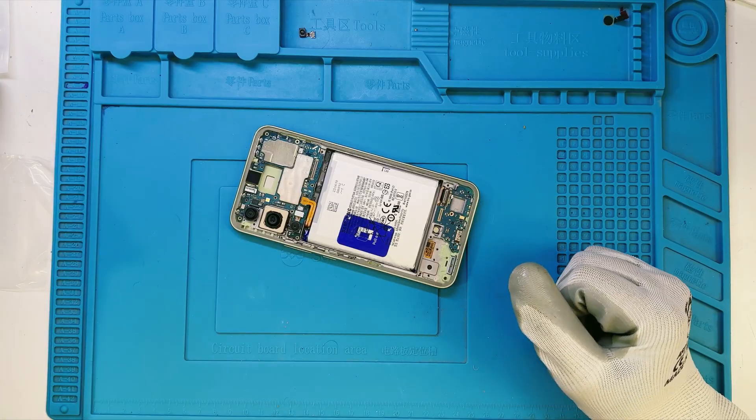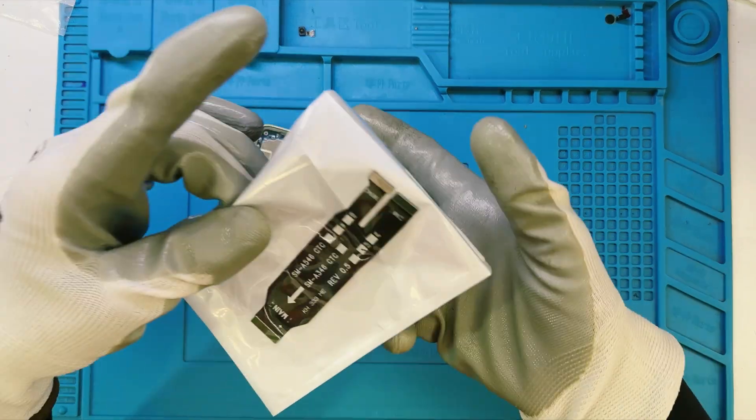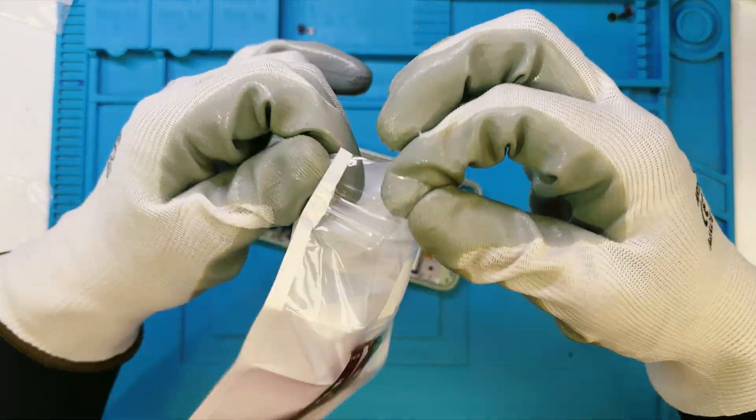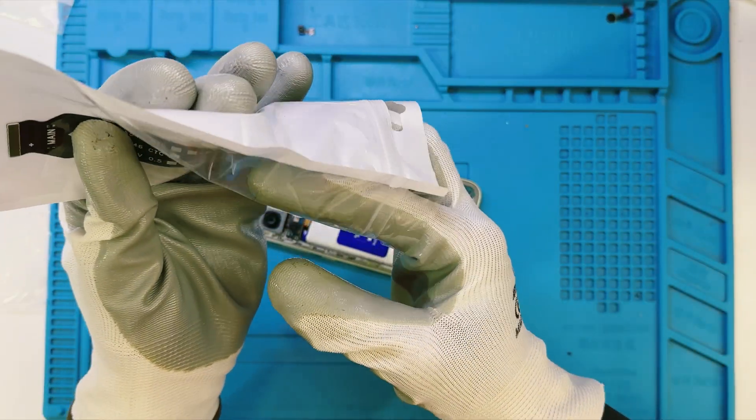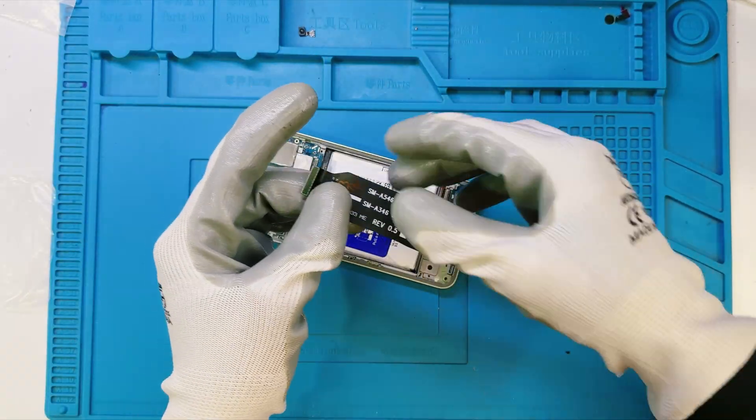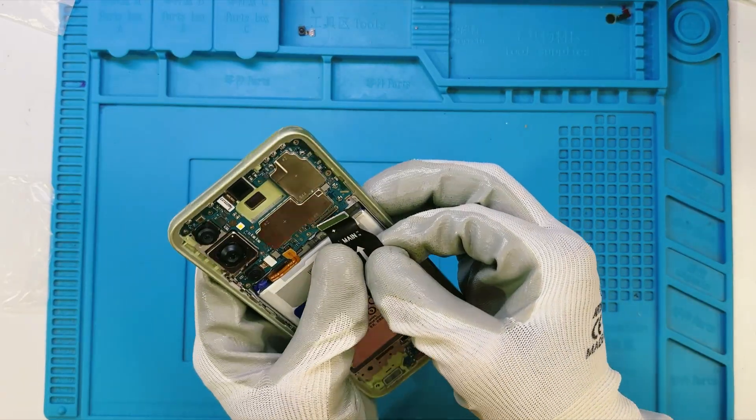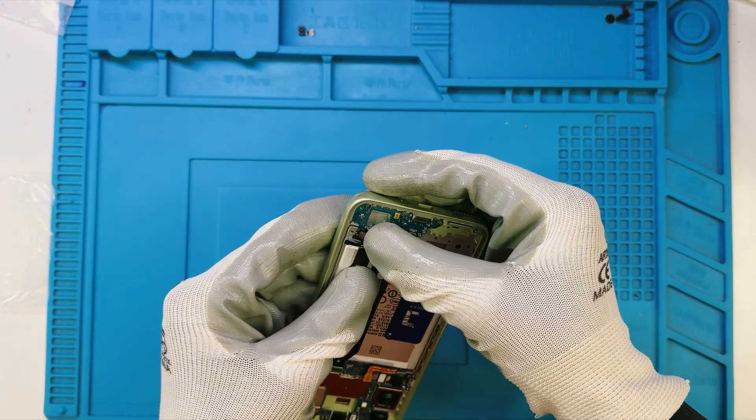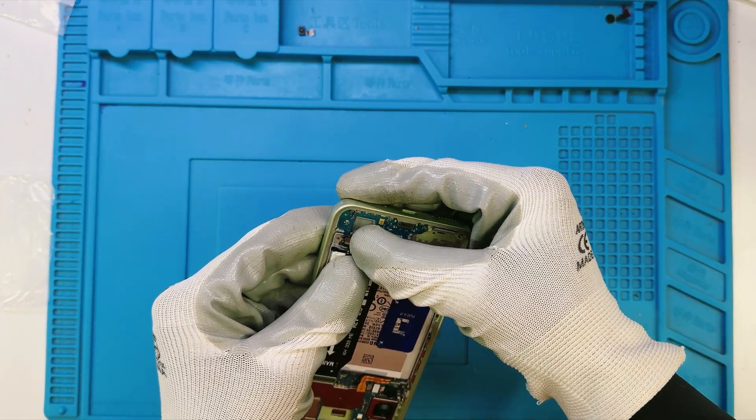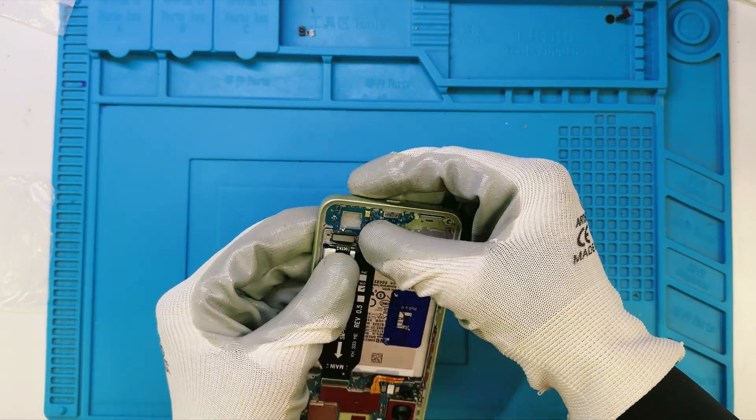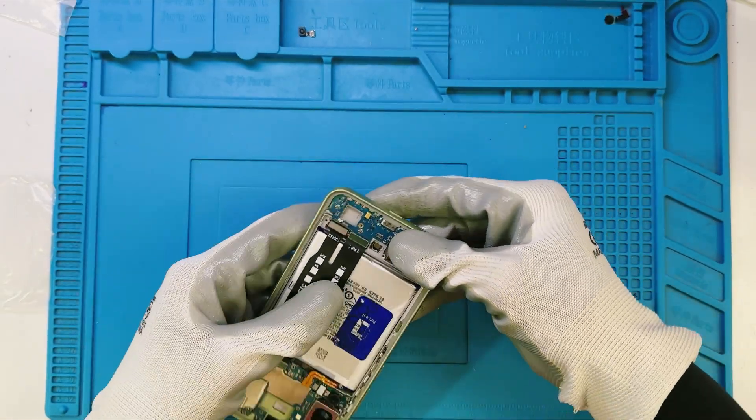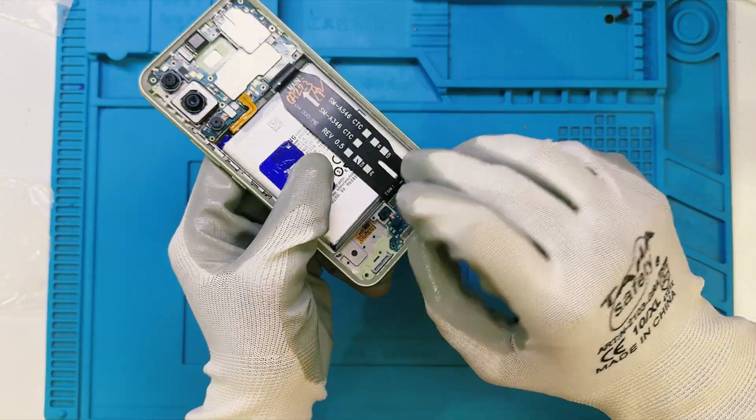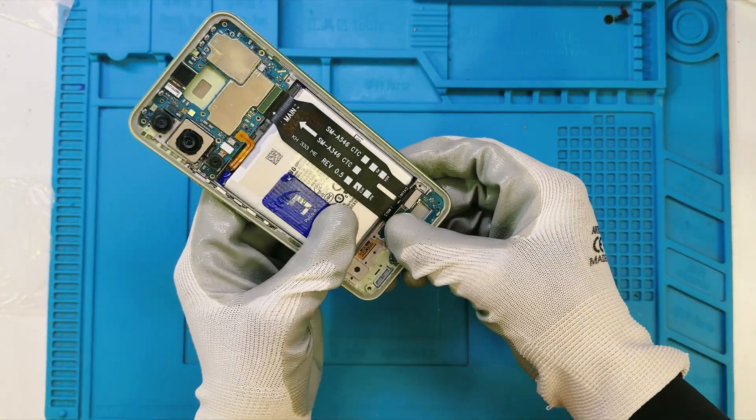This little part might look simple, but it's one of the most important pieces in the entire build. Why? Because this cable connects the display to the motherboard, and it also links the subboard to the main motherboard. Without this connection, nothing works. No display. No charging. No signal. So I'm handling it carefully and making sure it's completely clean before installing it. Now, let's fix it into place and check that each connector snaps in properly. A secure fit here is absolutely critical for the phone to function perfectly. Now, I'm fixing the fingerprint sensor onto the subboard. This tiny part is crucial for security and unlocking, so it needs to be seated perfectly in its position before we move on.